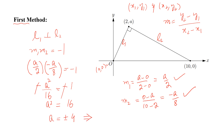Therefore A equals plus or minus 4. We choose A equals 4 because the point is in the first quadrant.